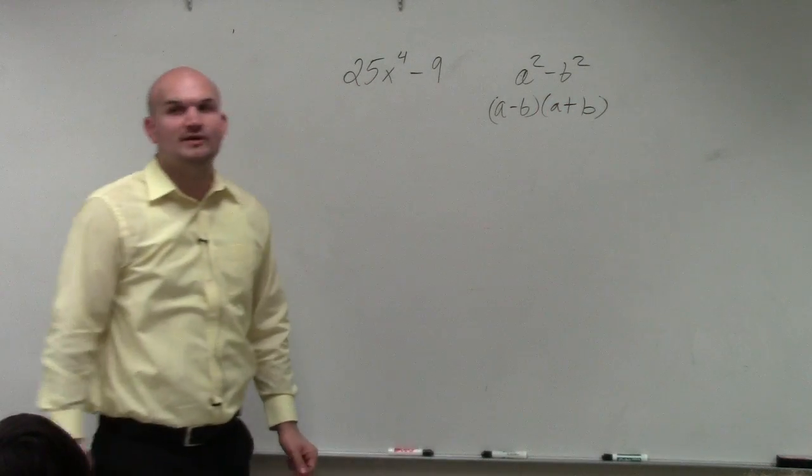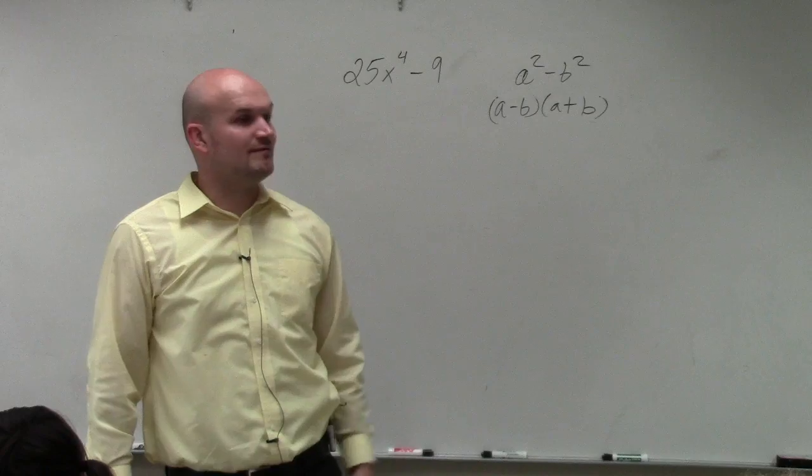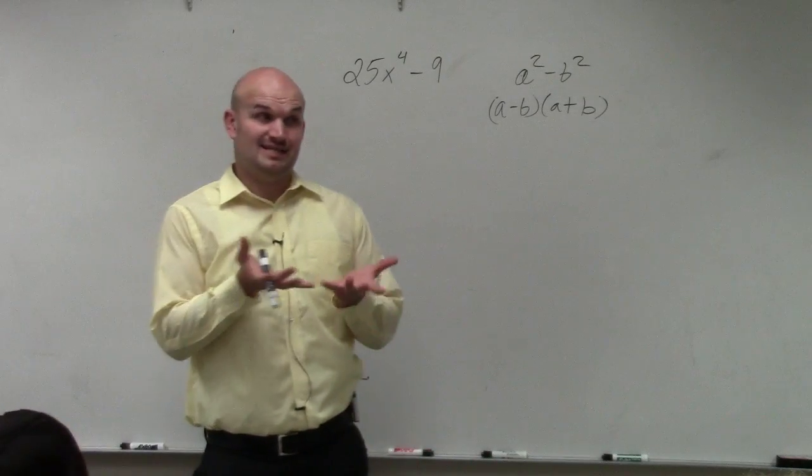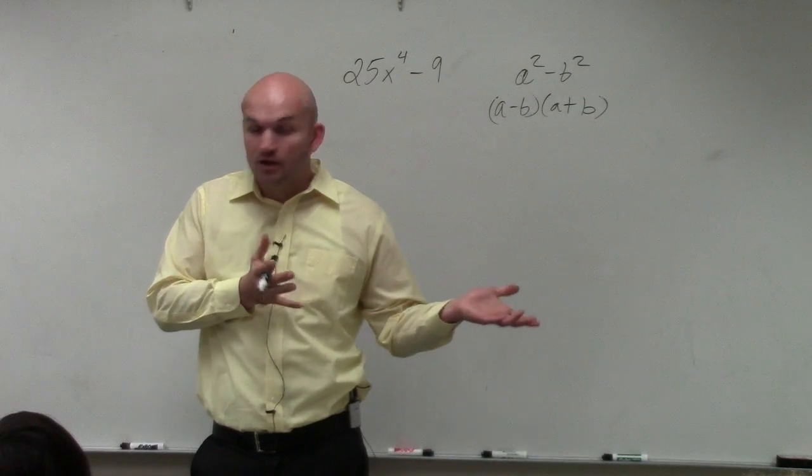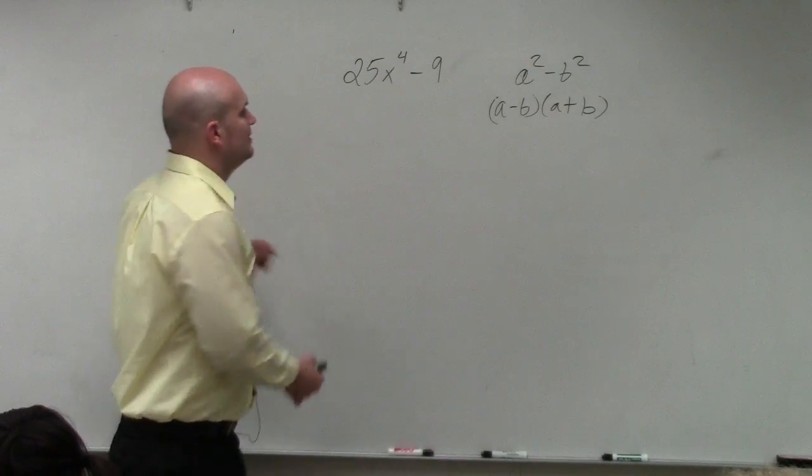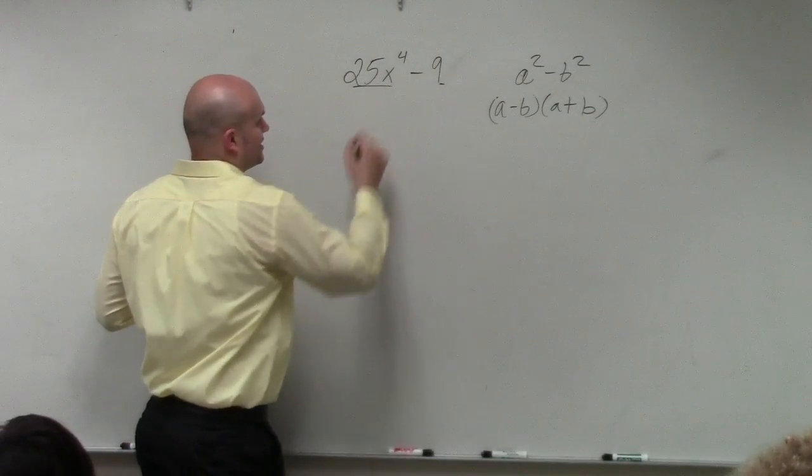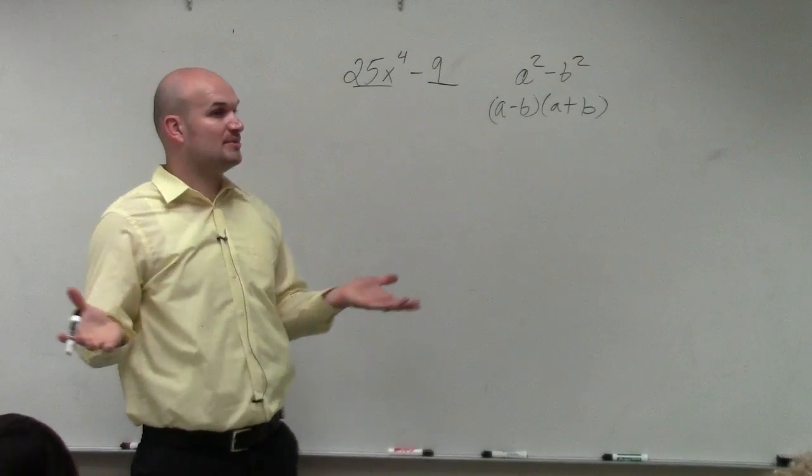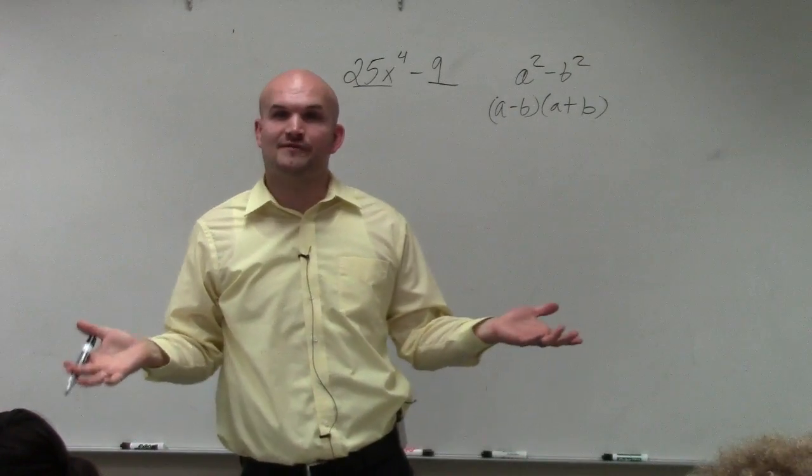Okay, so if you guys have a binomial that you're looking to factor, it's either you can factor out the GCF or you're going to look into factoring the difference of two squares. The main important thing I do is look at my two terms. If they're square numbers, I'm automatically going to first think of difference of two squares.